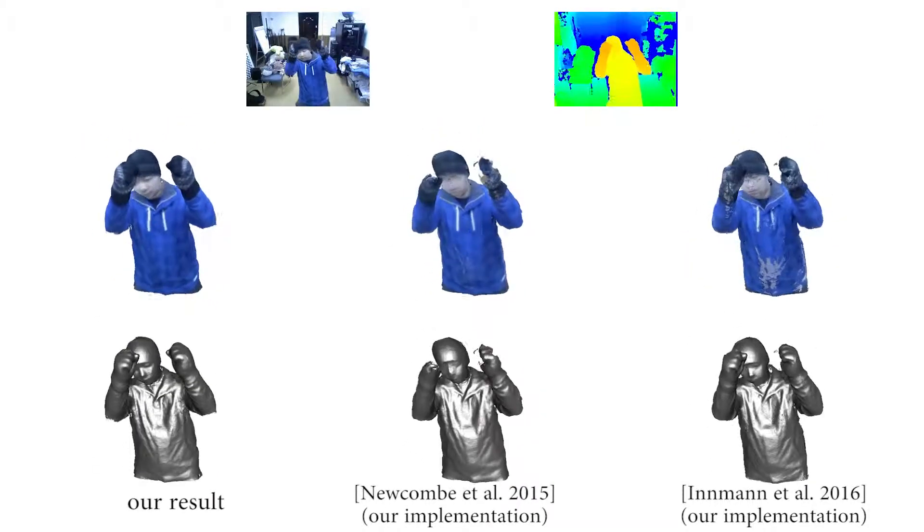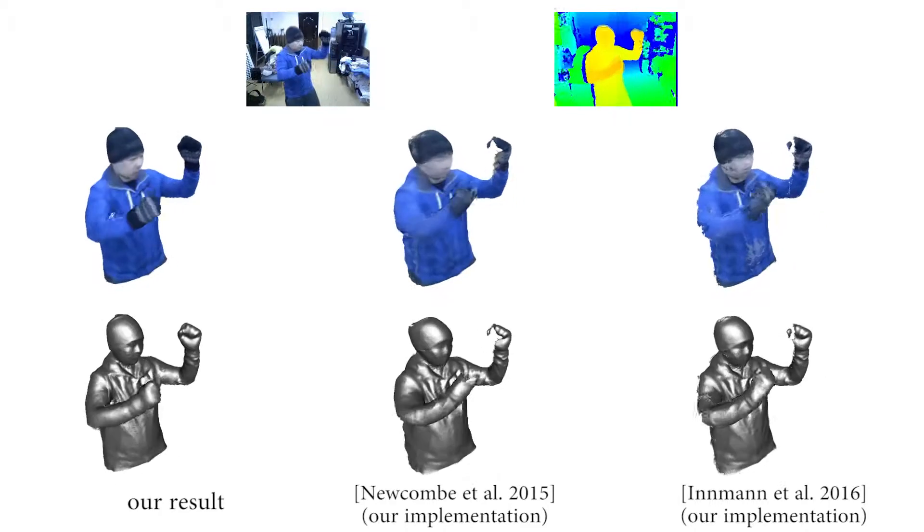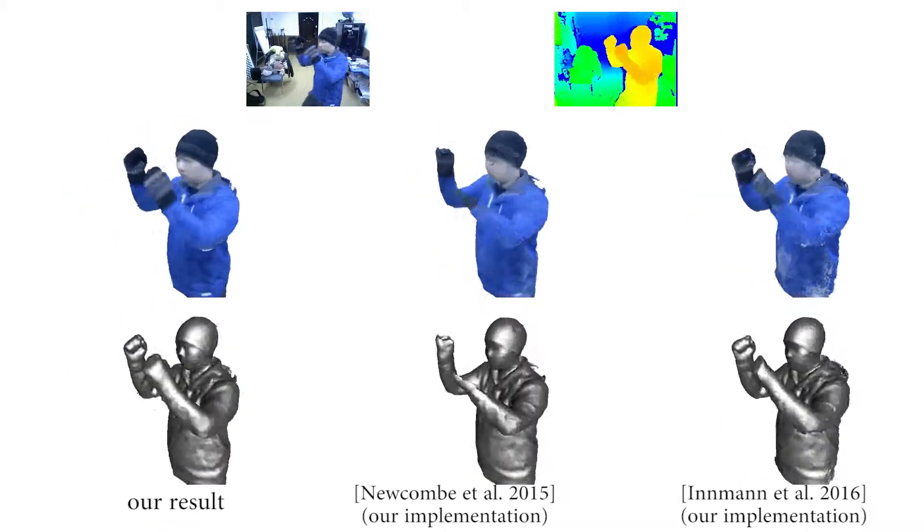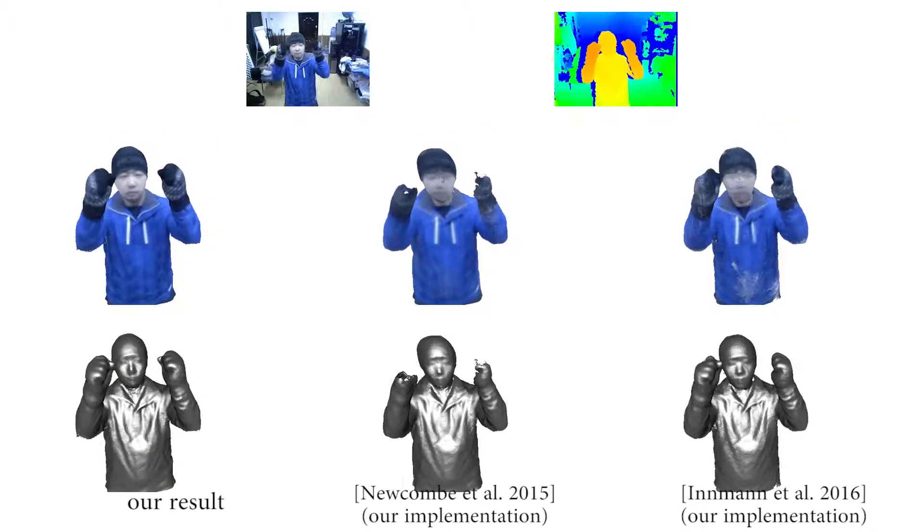In this comparison, we reconstruct a much better appearance, motion, and geometry. Notice the artifacts that appear in the other two texture results, which occur due to the misalignment between the reconstructed geometry and the color input.